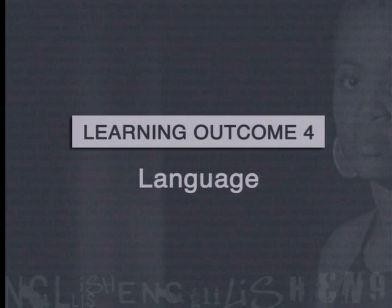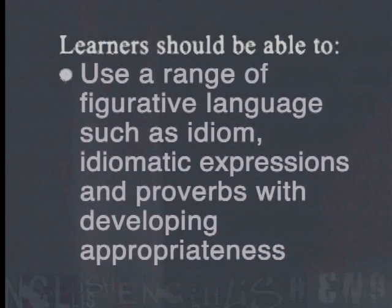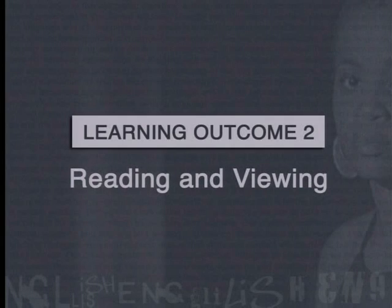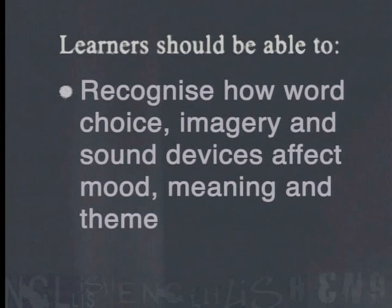The following lesson is linked to learning outcome four, language. It addresses the assessment standard that requires learners to use structurally sound sentences in a meaningful and functional manner. Learners should be able to use a range of figurative language such as idiom, idiomatic expressions and proverbs with developing appropriateness. This lesson also addresses learning outcome two, reading and viewing — exploring key features of texts and how word choices, imagery and sound devices affect mood, meaning and theme.